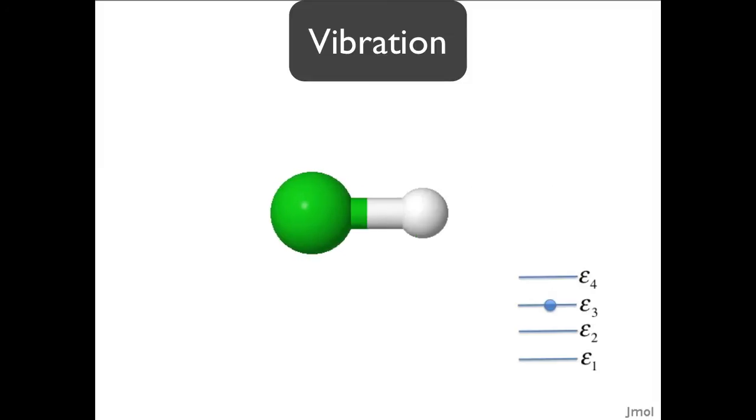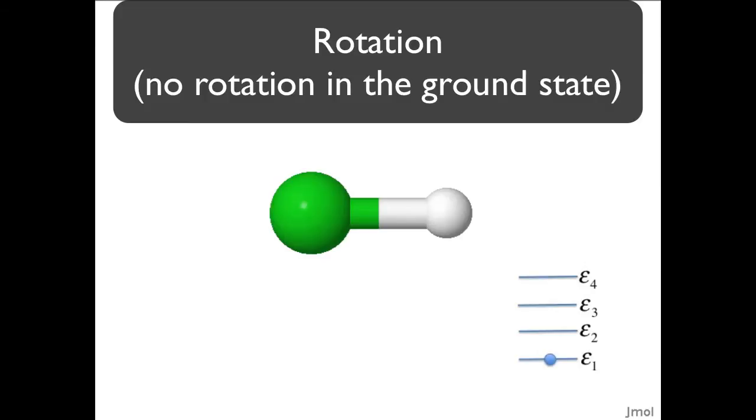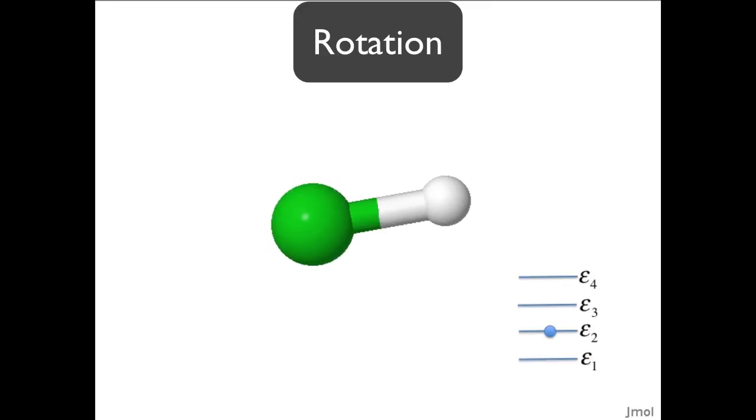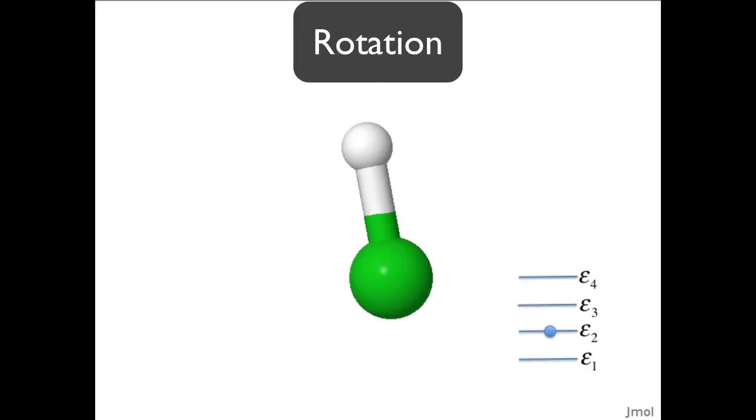The same is true for rotation. In the ground state, there's actually no rotation at all. You can go to the next higher energy state and see rotation. As you go to higher and higher rotational energy states, the molecule will rotate faster and faster.